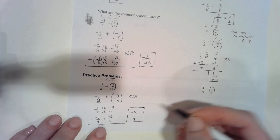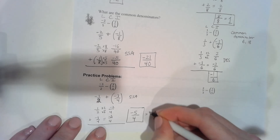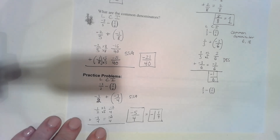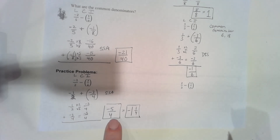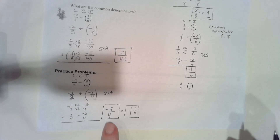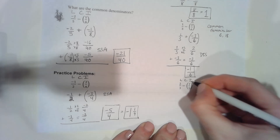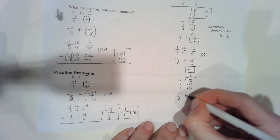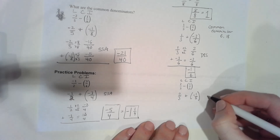If you want to simplify, negative five-fourths becomes negative one and one-fourth. But don't worry too much about simplifying just yet. If you got negative five-fourths, you're doing a great job.